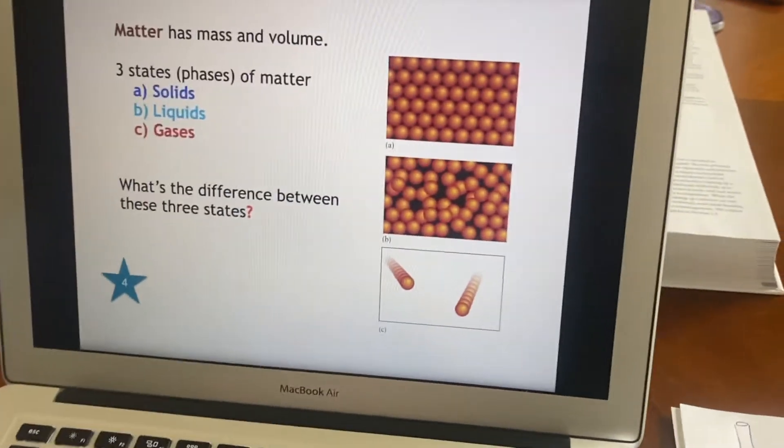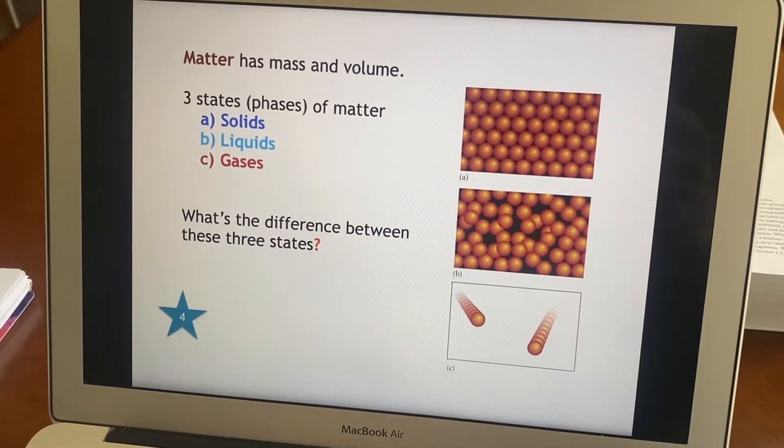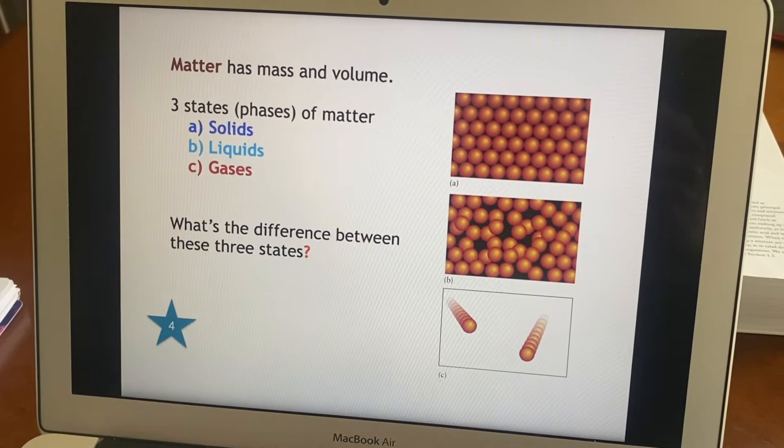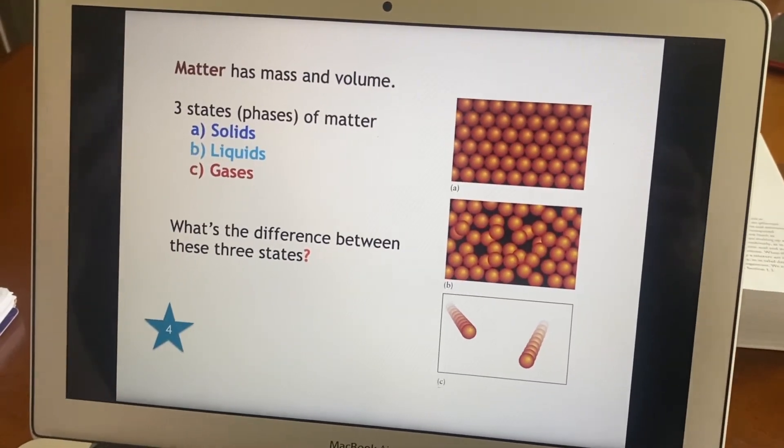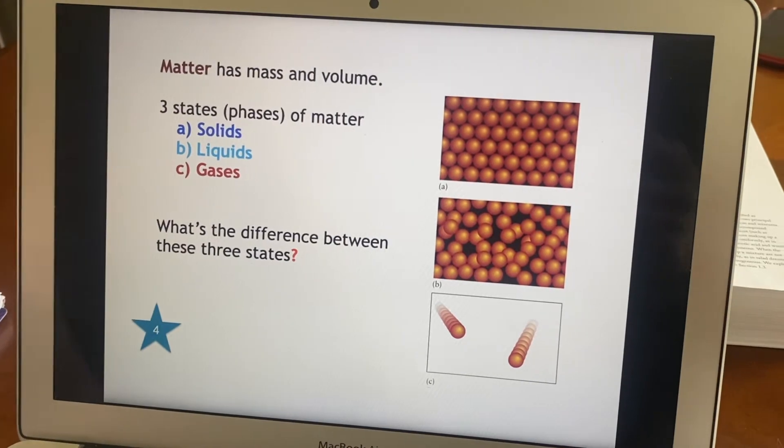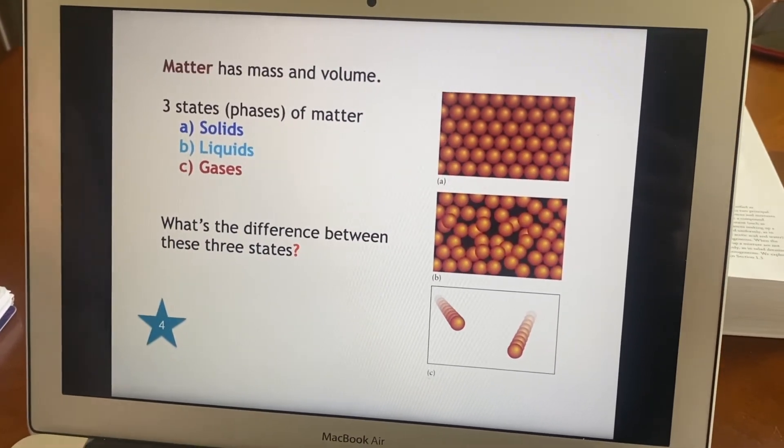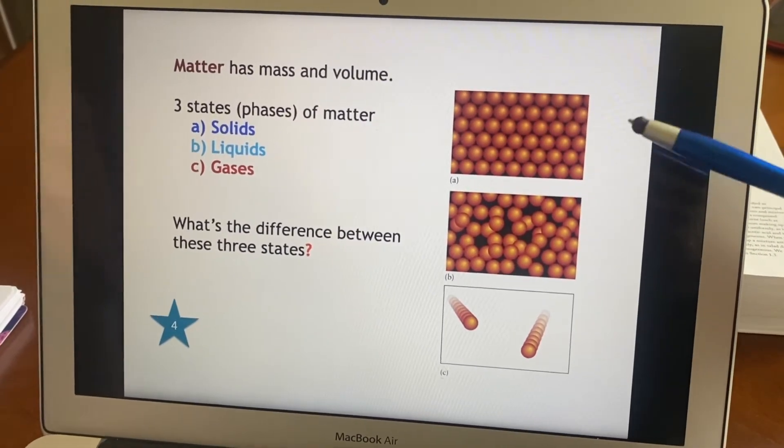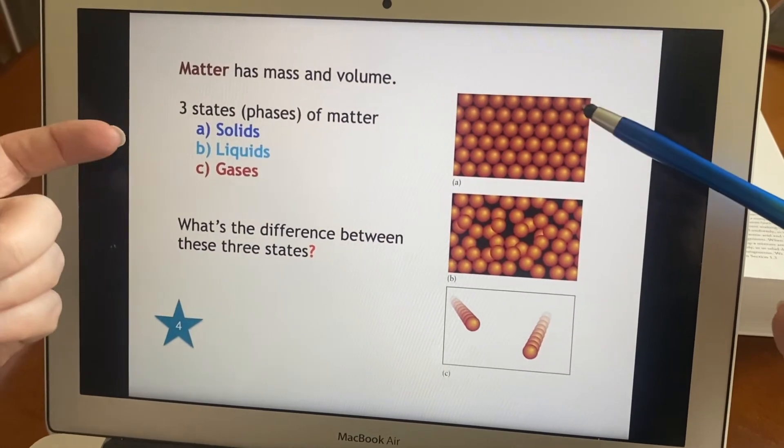Okay, so matter we generally define as something that has mass and volume, takes up space. There are three phases of matter. I realize you may have learned about plasma as a fourth state of matter, but in chemistry we stick to the three basics: solids, liquids, and gases.